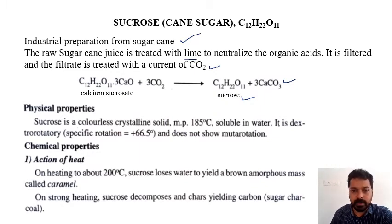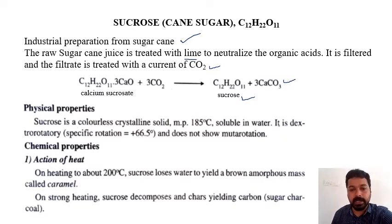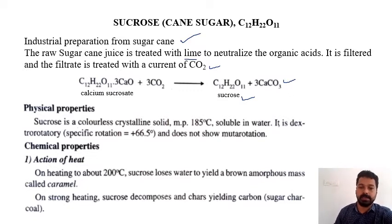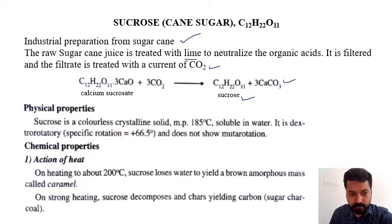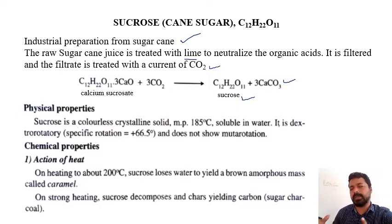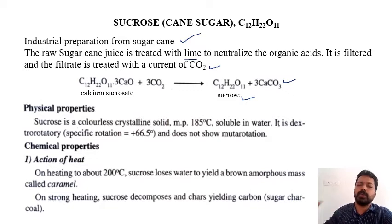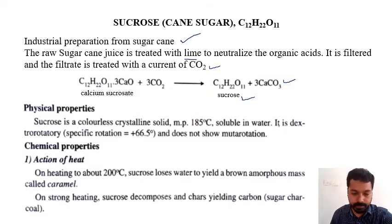Coming to the physical properties of sucrose: it is a colorless crystalline solid with a melting point of 185°C. It is soluble in water and is dextrorotatory. However, when dissolved in water, there is an inversion of rotation — it becomes levorotatory — because hydrolysis gives glucose and fructose, and the levorotation of fructose predominates.